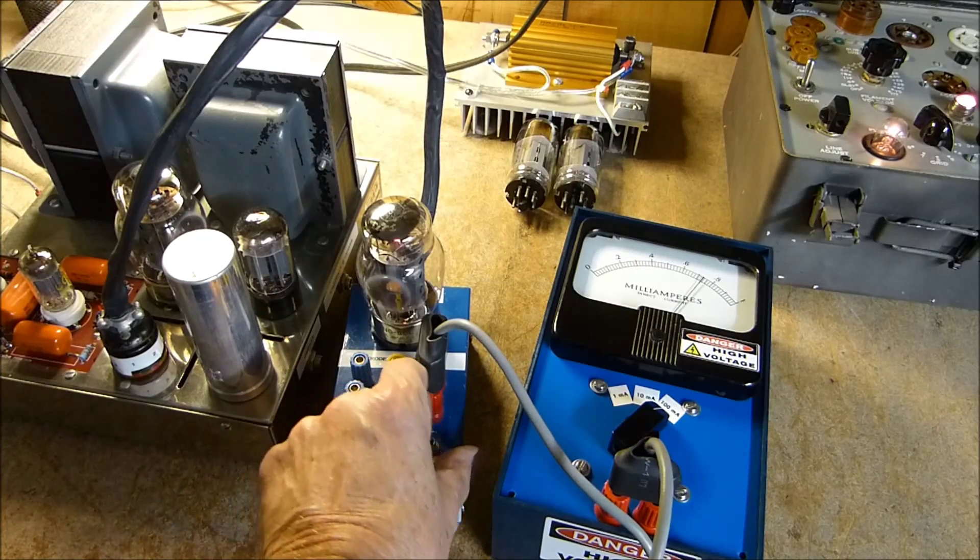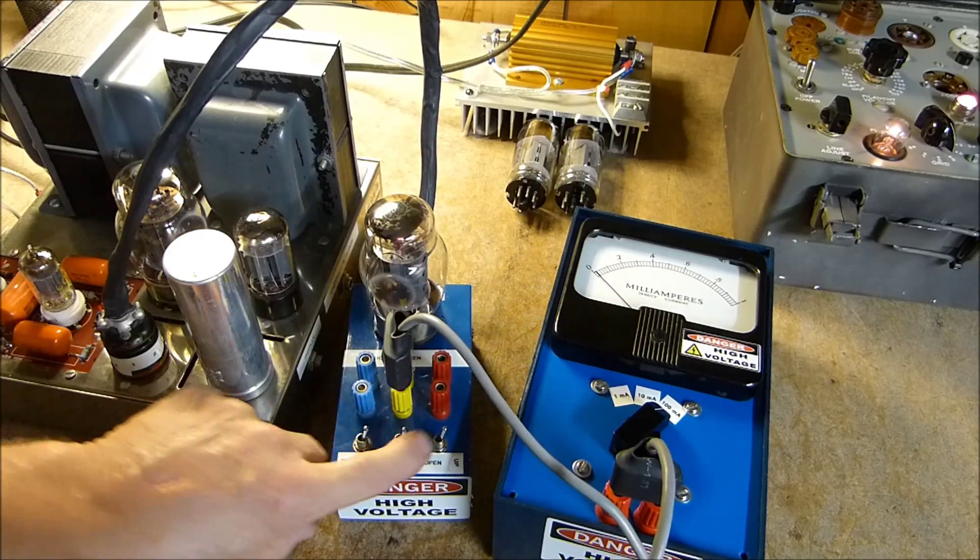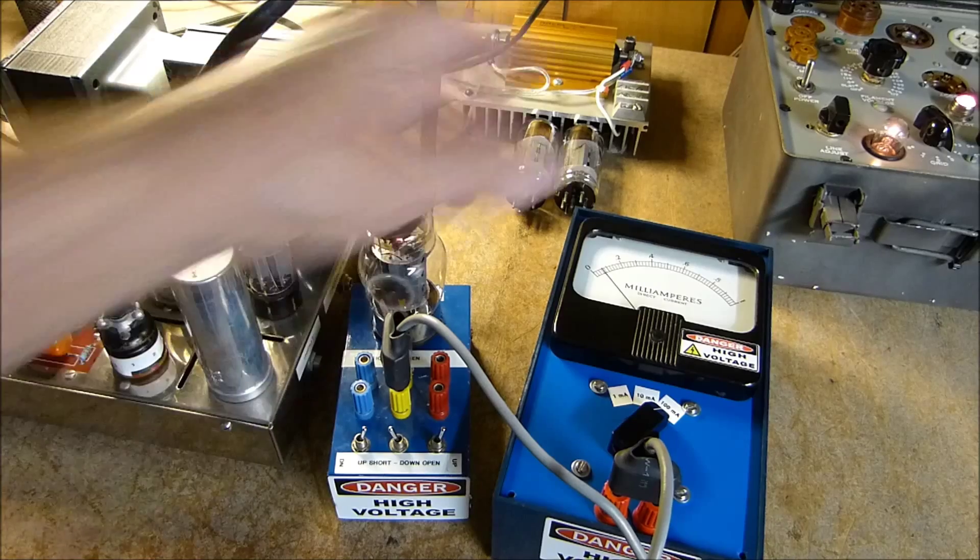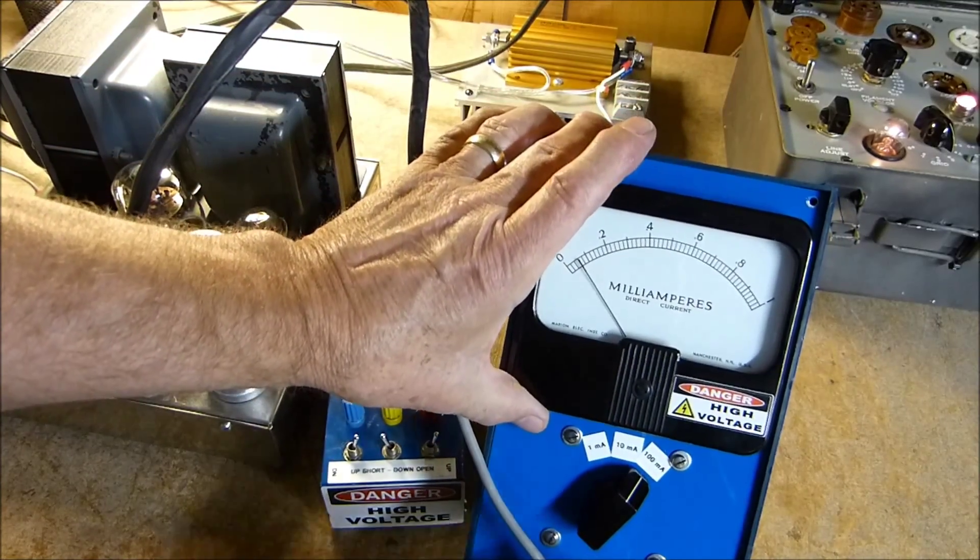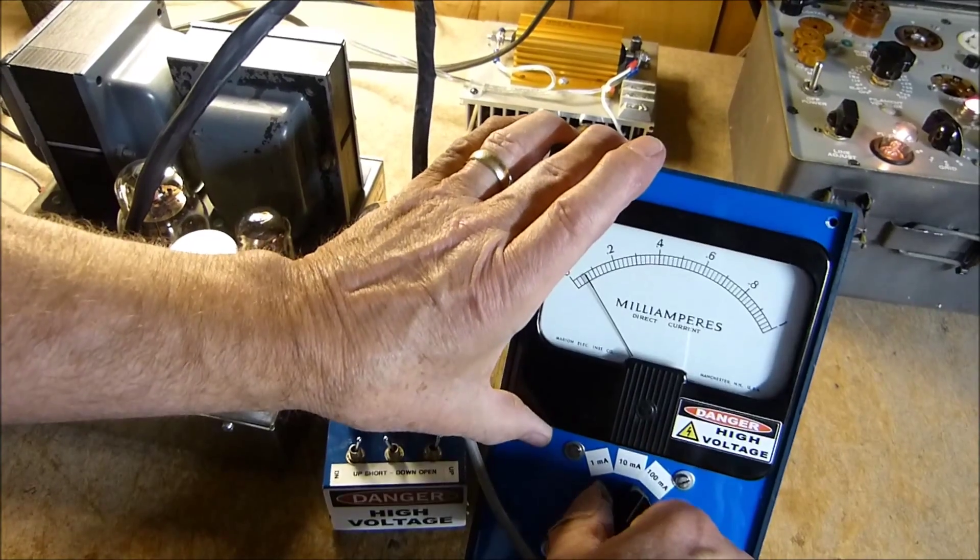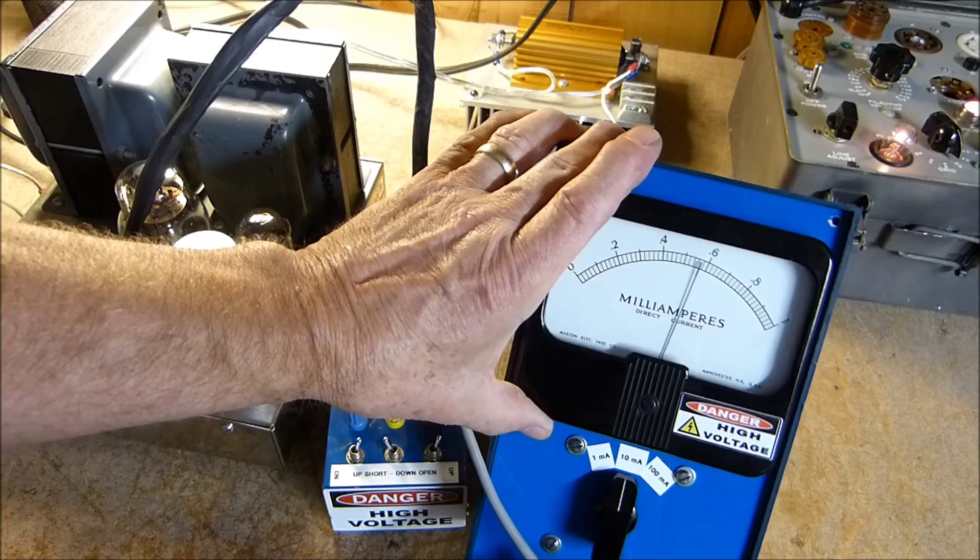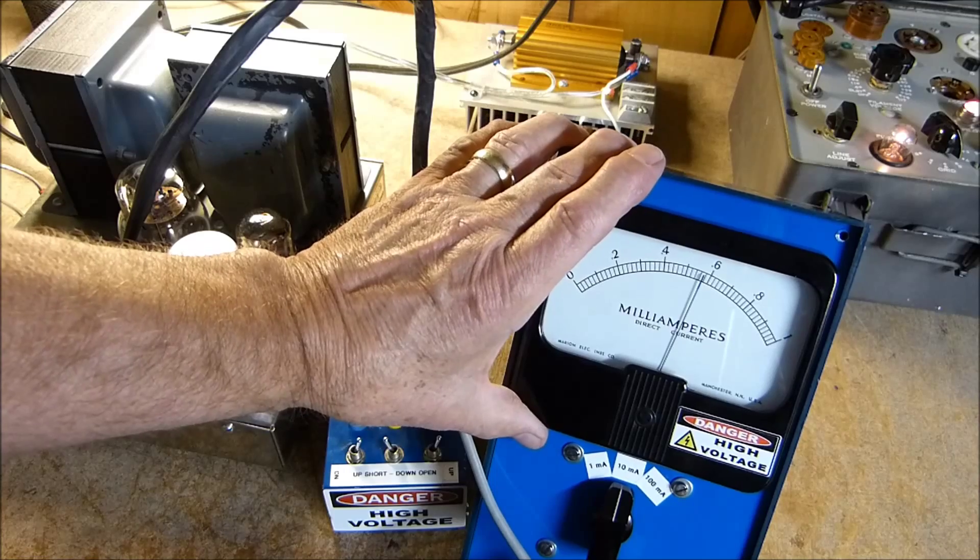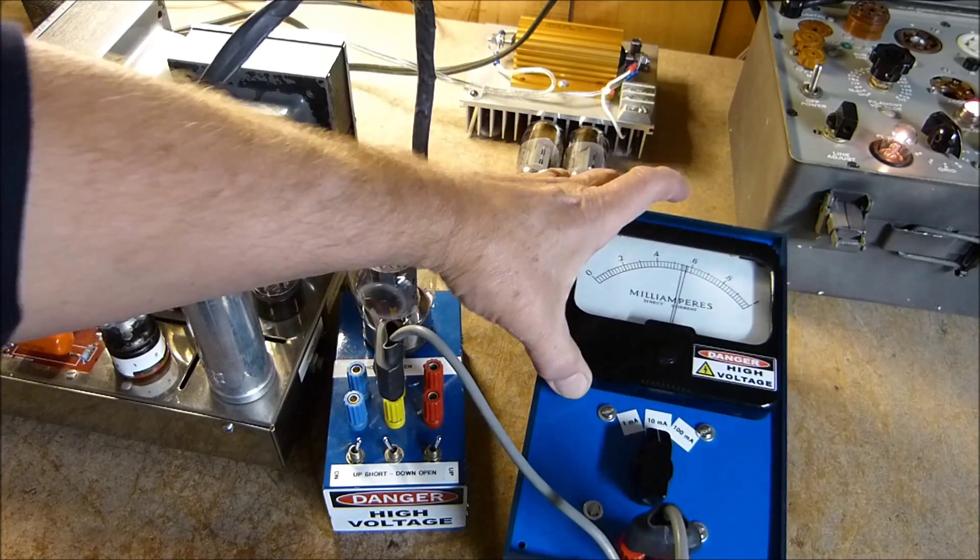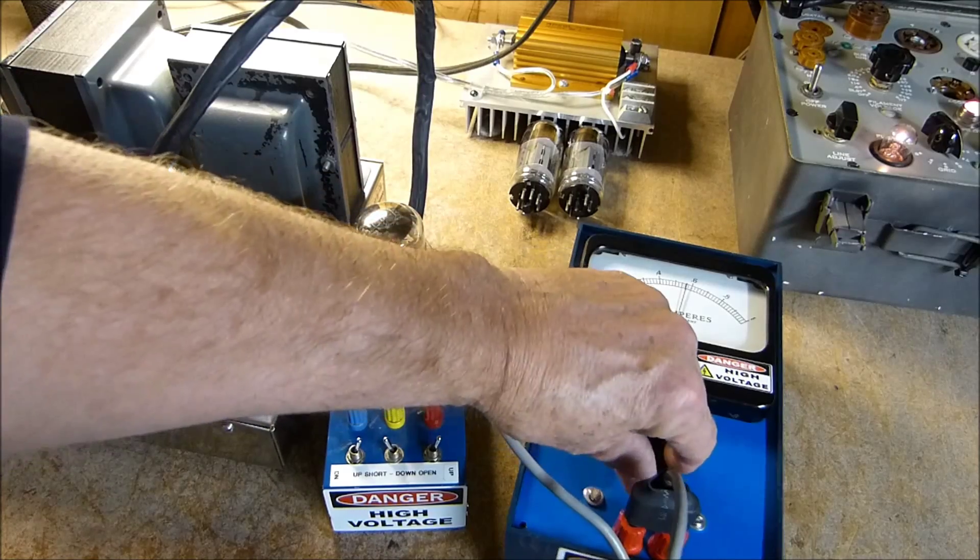If you want to read the screen current, make sure you short it, move this guy over to the screen and open the screen. Well, see it's just a tiny little reading so that's not too good. So we go down here and flip this thing over to 10 milliamps and it's about 5.7 milliamps or so, which is exactly what the digital meter reads.